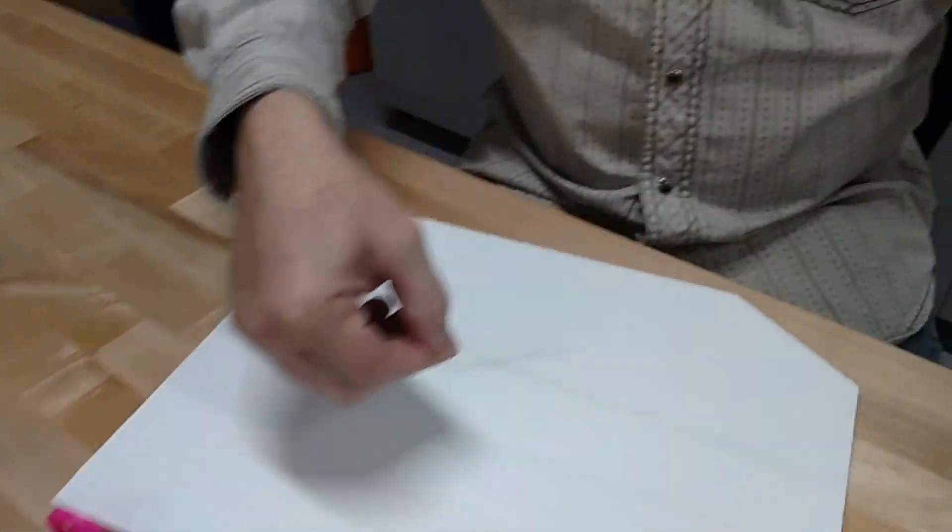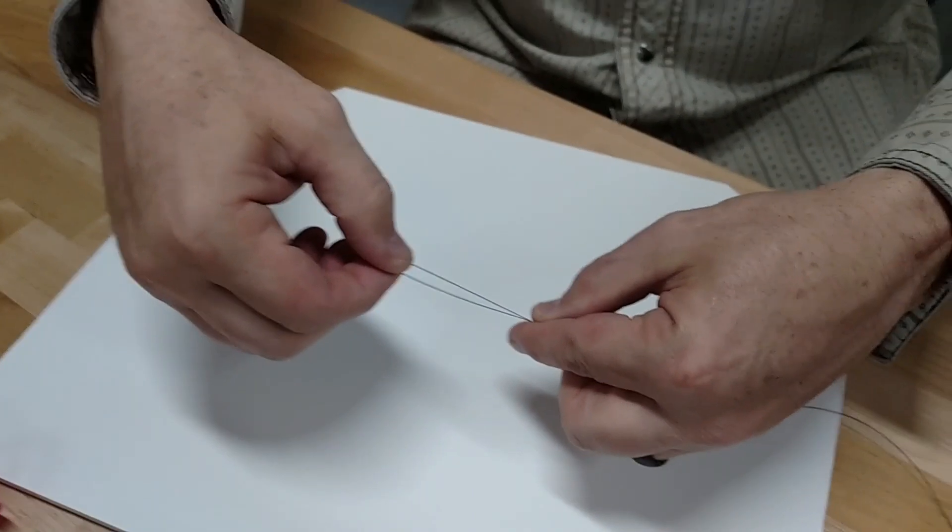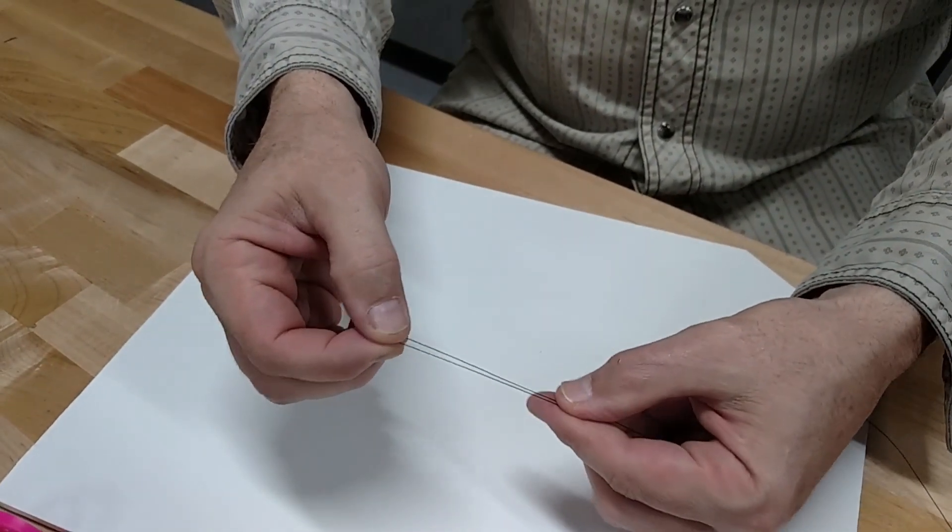The first thing you're going to want to do is tie a loop on the end. This is the easiest way I've found to do it. Just fold part of the string back.